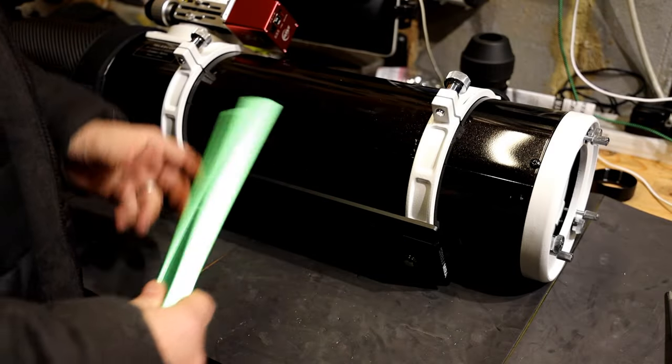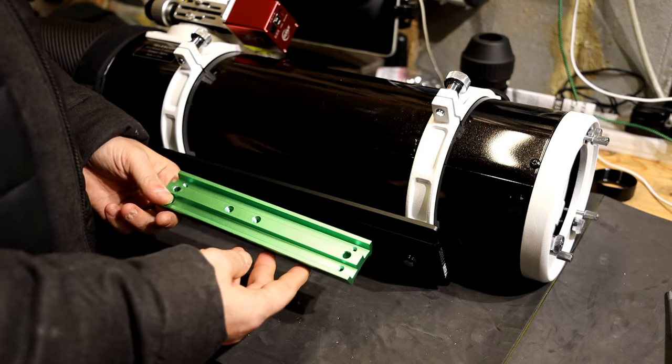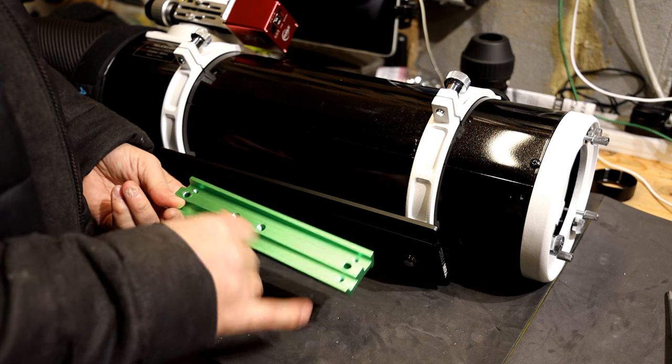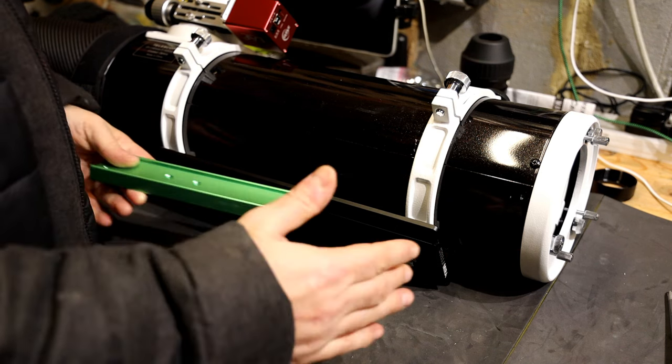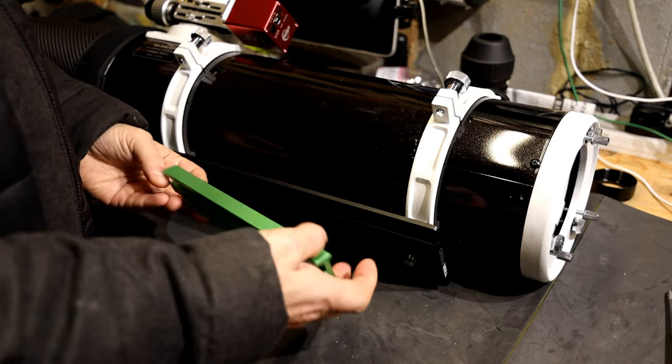So the 130 PDS comes with a smallish dovetail bar as standard. I was kind of forced into changing this because I bought an ADM saddle for my EQ6R Pro. It's a much larger saddle base and with the bolts in this dovetail it wouldn't sit in the new saddle.